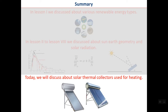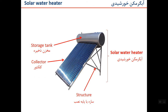The two main applications for solar energy are solar thermal and solar electricity. We may discuss solar thermal for two weeks and then move to the solar electricity topic. The main device in solar heating is a solar water heater, which is comprised of a storage tank, the collector, and the structure.